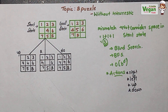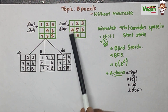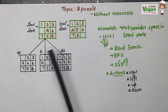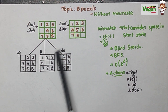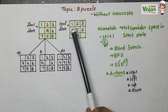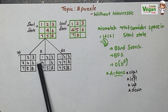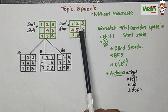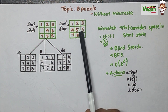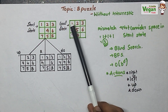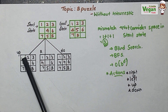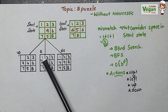Now we have three possibilities. We will look for the best opportunity by comparing each state with the goal state. Here 1 must be there — it is there. Comparing the right state: 1, 2, 3, 4 match the goal state's first four positions. This right state is best for going towards the goal state because 1, 2, 3, 4 are all similar.